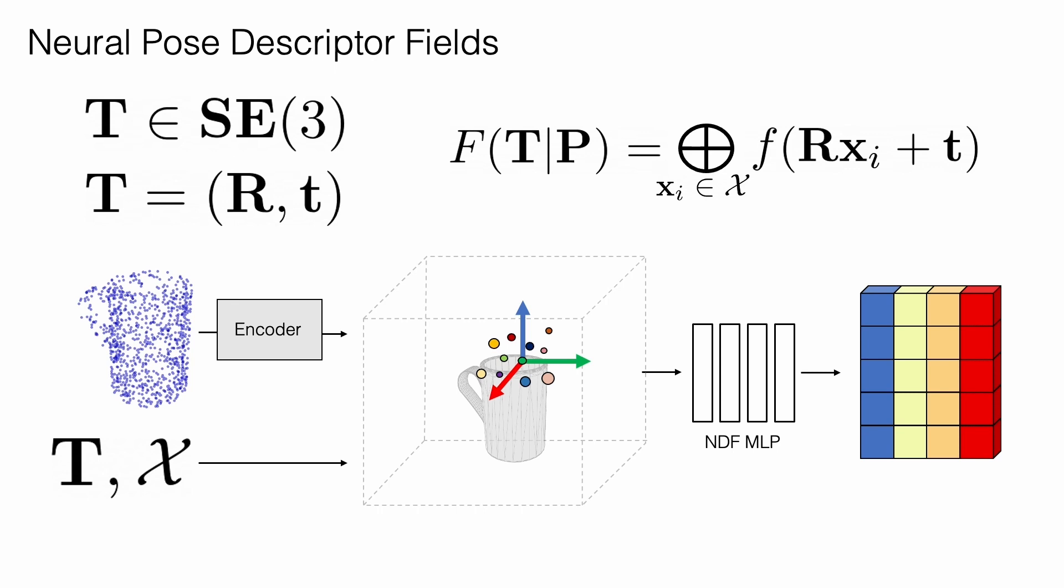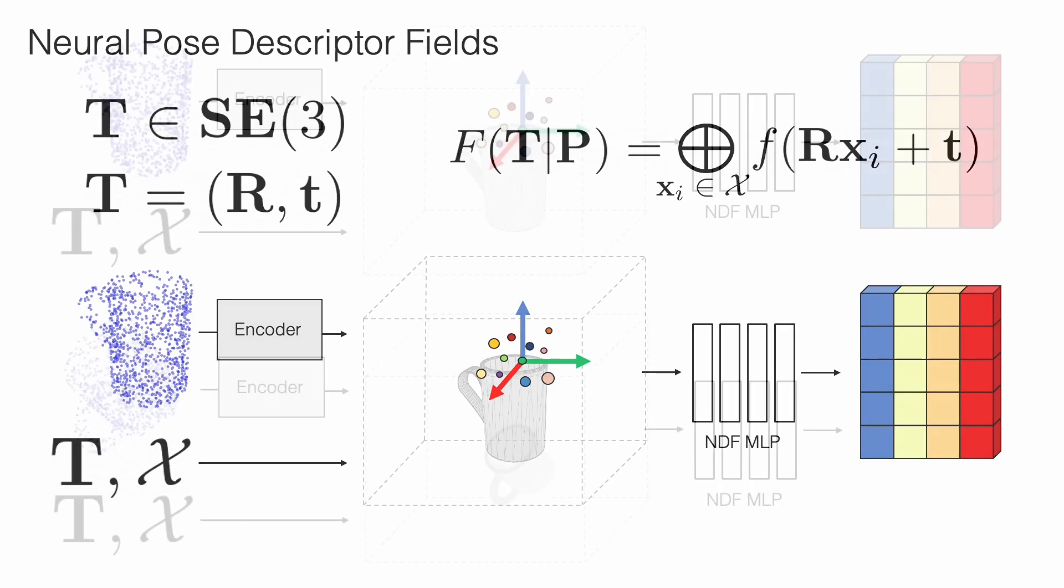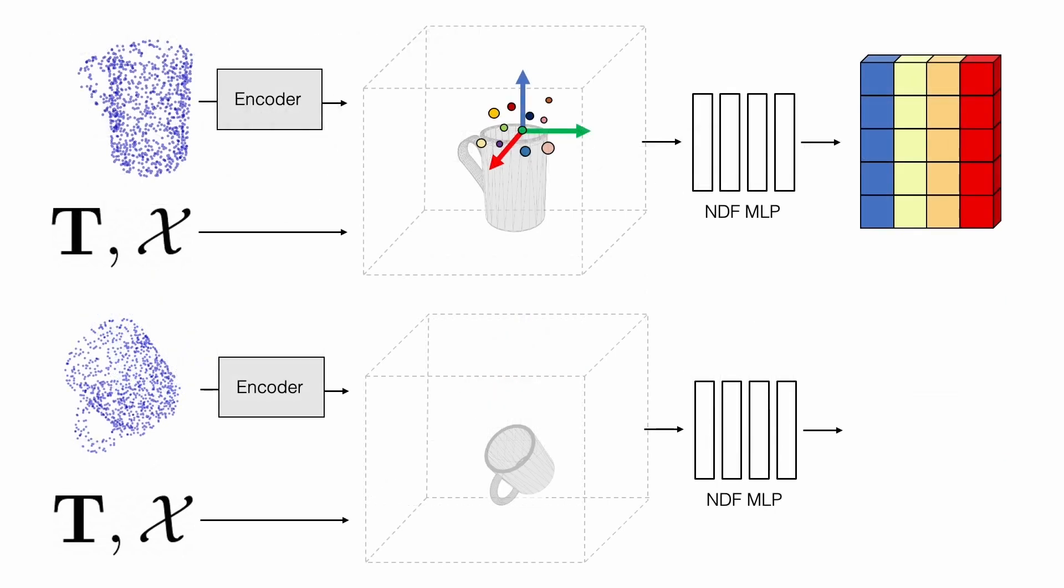If we now consider applying different SE3 transformations to the point set, the query point descriptors change accordingly. Through this construction, we obtain pose descriptor fields, which represent SE3 poses of the point set relative to some canonical pose in the world frame. This yields a descriptor that also encodes the pose of a local frame that is rigidly attached to the query points. Note that this construction allows our pose descriptor field to inherit the same correspondence and equivariance properties of the point descriptor field.